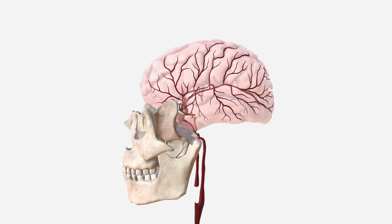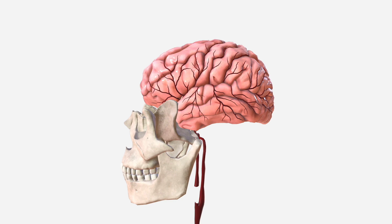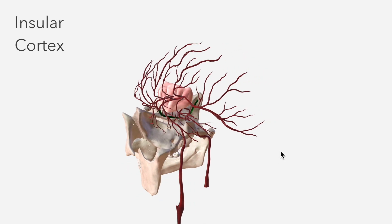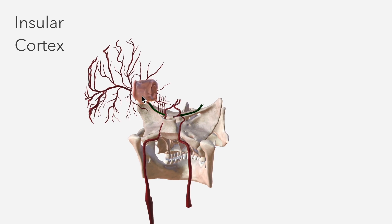If we bring back in the cerebral cortex, all of these branches which we discussed are M4 segments of the MCA, meaning they traverse the external surface of the cerebral cortex. You recall that the M2 and M3 segments are closely related to the insular cortex, which are brought in here to demonstrate that relationship.